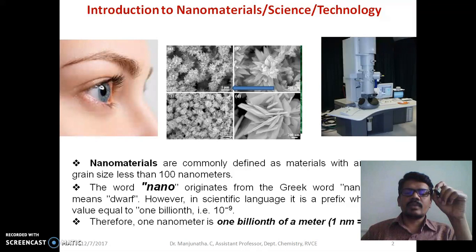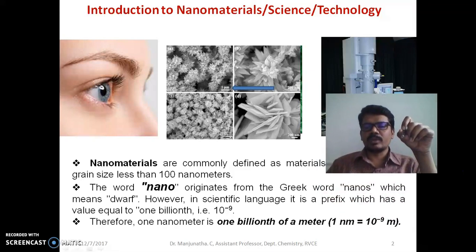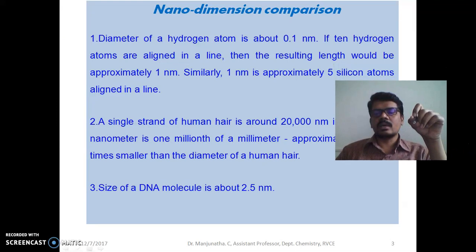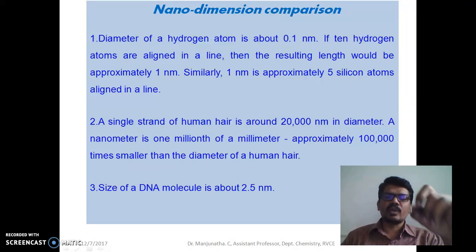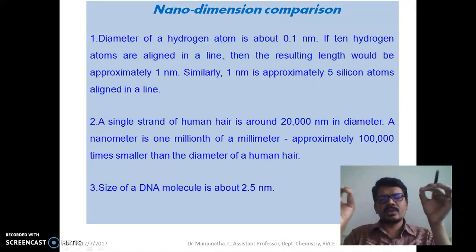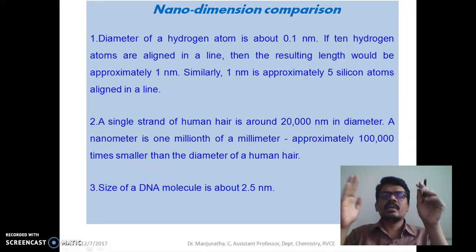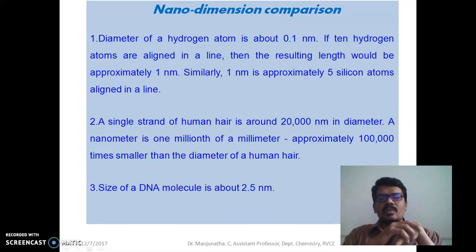So one nanometer is one billionth of a meter. Let us understand this meaning of nano with other examples. If the diameter of hydrogen atom is about 0.1 nanometer, if you align 10 nitrogen atoms in a single line then the length would be one nanometer. Another example is if you align five silicon atoms in one line, the length of the five silicon atoms is one nanometer. And also a single strand of human hair is around 20,000 nanometer in dimension.